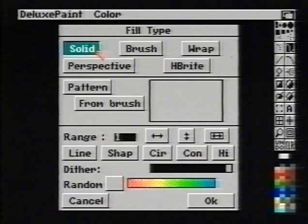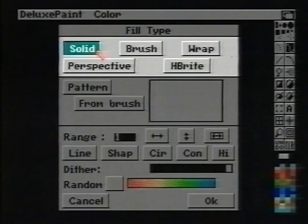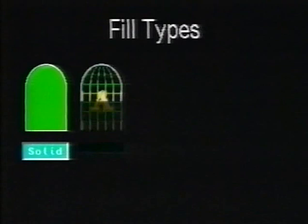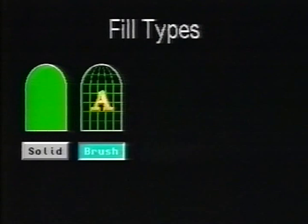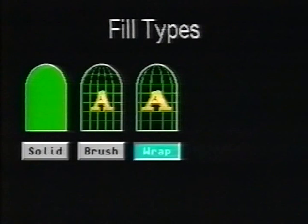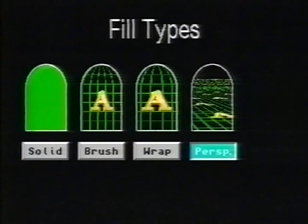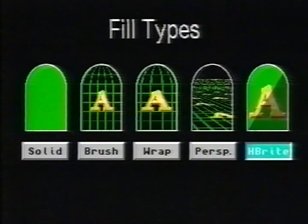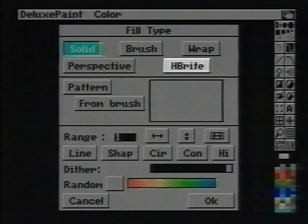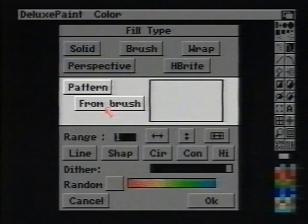Solid fills with the current foreground color when using the left mouse button. Brush fills with one image of the current custom brush and sizes it to fit the filled image. Wrap fills with the current custom brush and adjusts it to give the illusion of wrapping the brush around a 3D solid. Perspective fills with a pattern of the current brush in the current perspective setting. H-bright fills with a half-bright painting mode — a special form of tinting that only works in half-bright mode. Pattern fills with a pattern made from a brush; you must first click the From Brush button to create a pattern of the current custom brush.